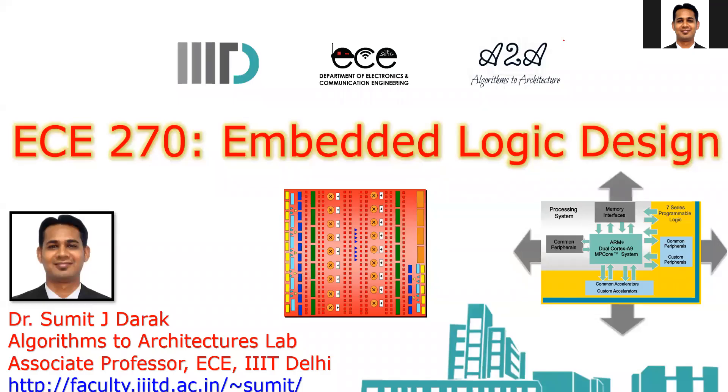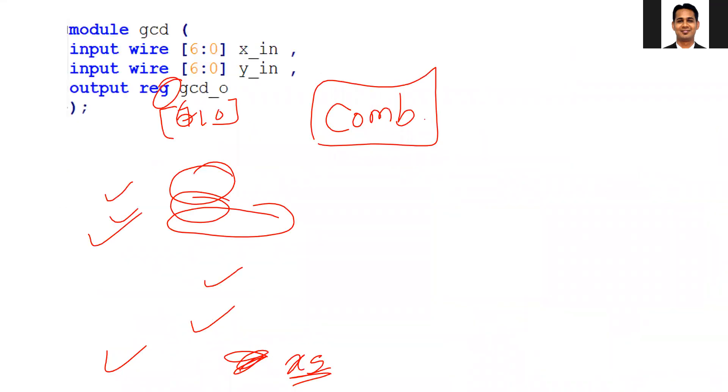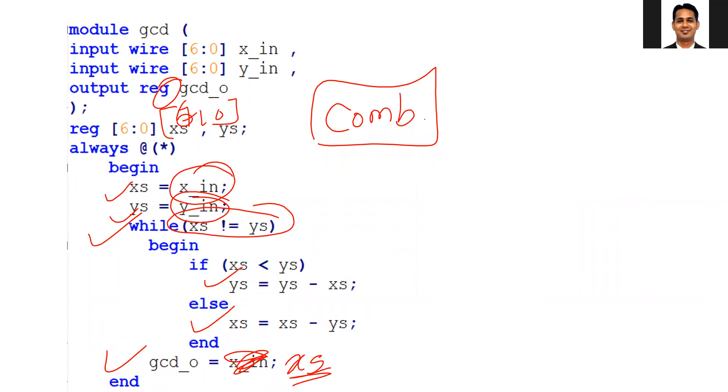Hello everyone, welcome to the next lab of ECE 270 Embedded Logic Design. In the previous lab video, we discussed our problem where we want to find the greatest common divisor of two numbers. We also discussed one of the solutions using the while loop and the challenges in that solution.